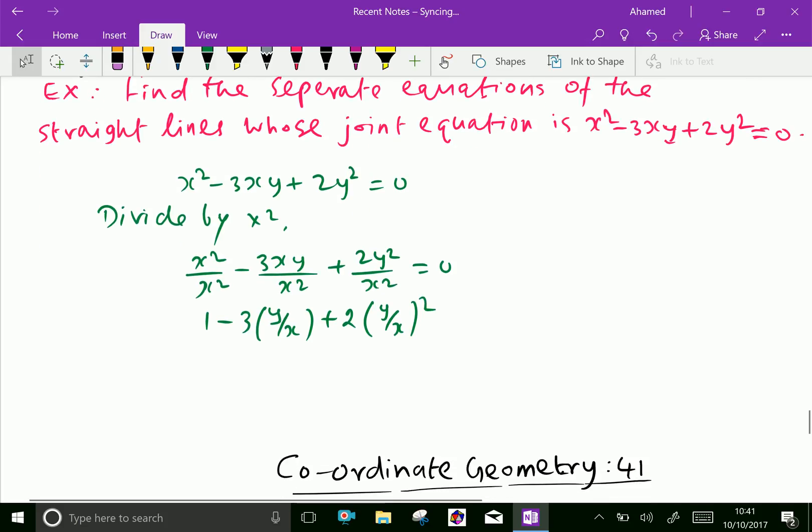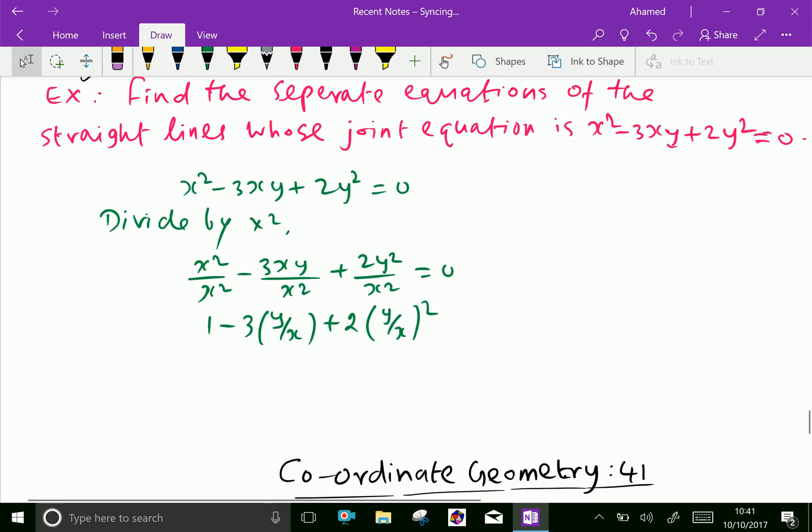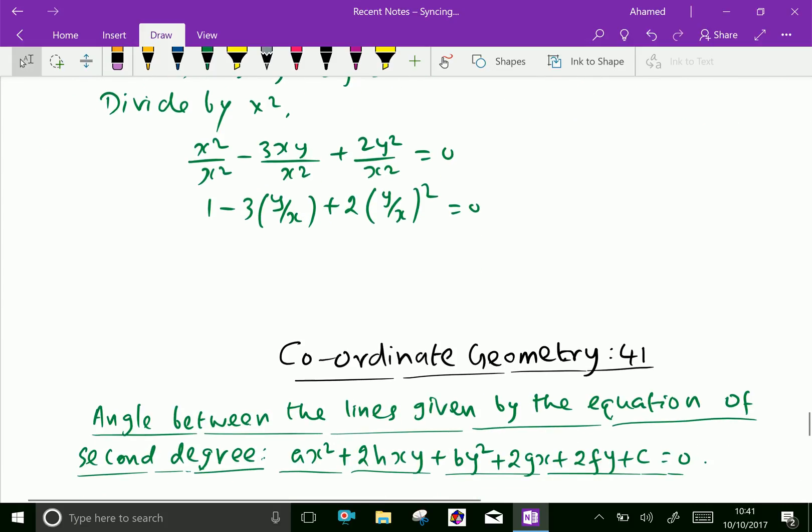That we can write this equal to 0. Now we can rewrite here 2y over x whole squared minus 3y over x plus 1 equals 0.